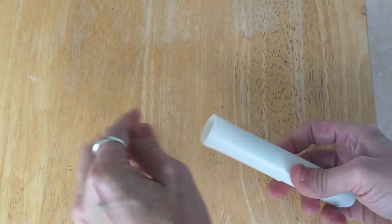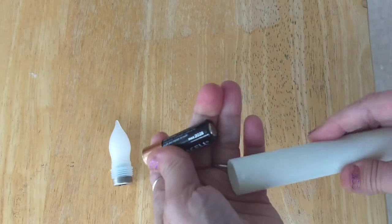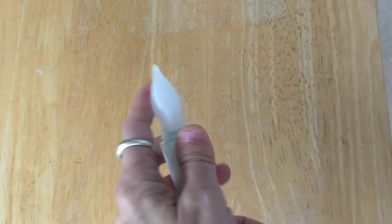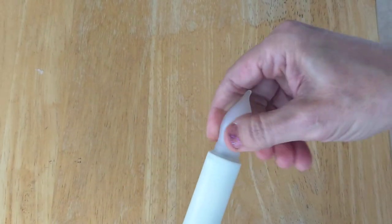You just unscrew the flame, put the batteries in, both batteries nub side up, positive side up, and screw the flame back on until the light comes on. Sort of just like a flashlight.